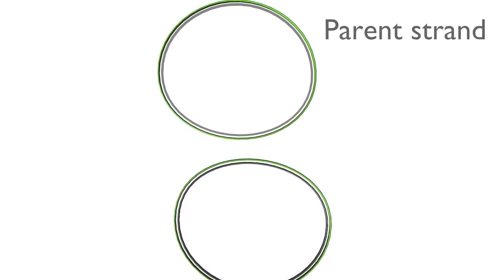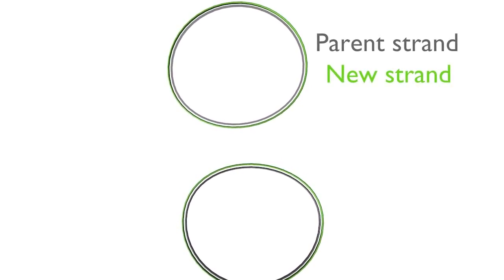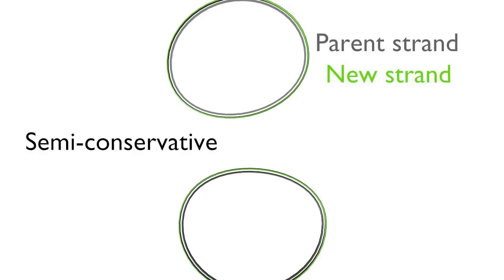The two daughter DNA molecules now consist of one parent strand of DNA shown in grey and one newly made strand shown in green. Thus, DNA replication is termed semi-conservative.